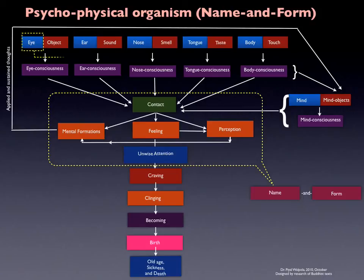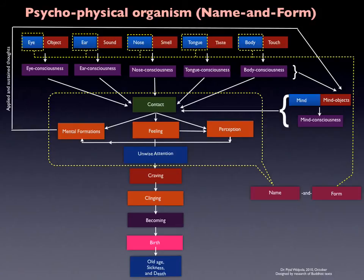Form is basically the eye, ear, nose, tongue and body. Together, these five things constitute the form. So together, name and form are called the Psychophysical Organism.